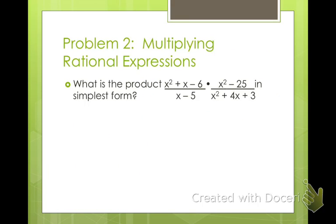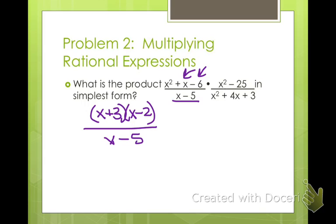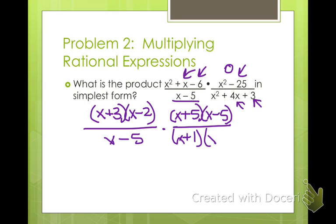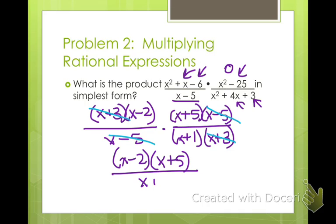Alright, so let's try that. So we need to factor x² + x - 6, a number that multiplies to be negative 6 but adds to be positive 1. So x + 3, x - 2. We can't do anything with this x - 5, so we leave it on the bottom. And then times, I need a number that multiplies to be negative 25 but adds to be 0. I have x + 5, x - 5. And then here, a number that multiplies to be 3 adds to be 4, x + 1, x + 3. Now we have all of our factors. We need to go through and see if there's anything we can cancel out of both the numerator and the denominator. Well, I see an x - 5 here and here. I see an x + 3 here and here.